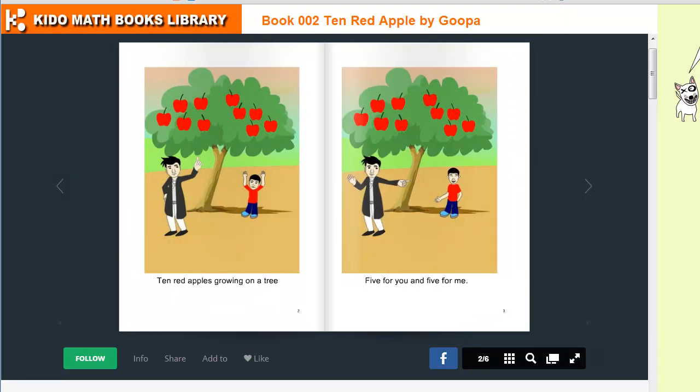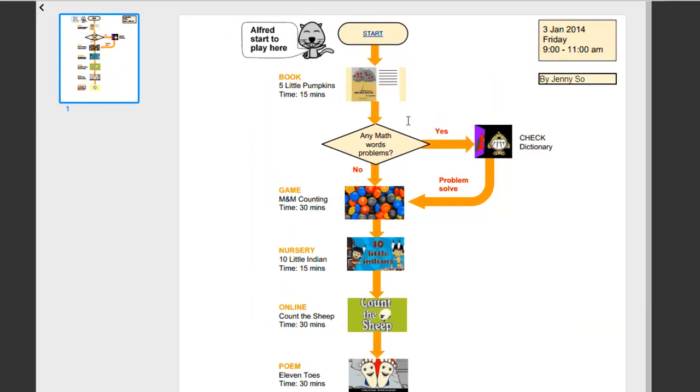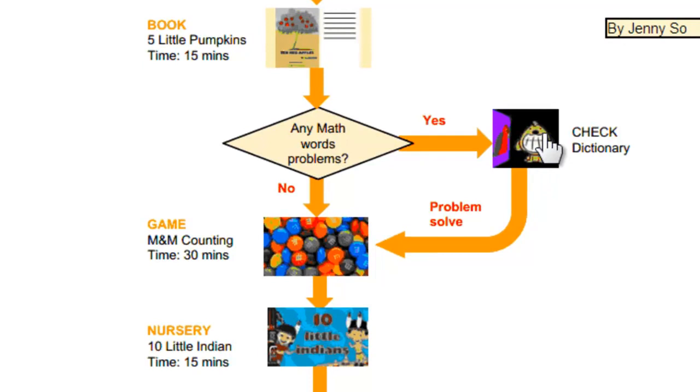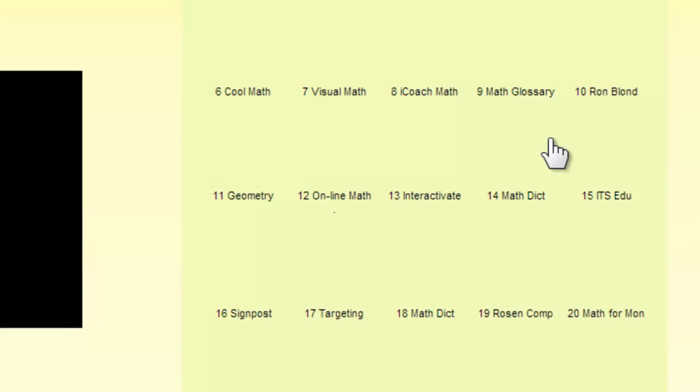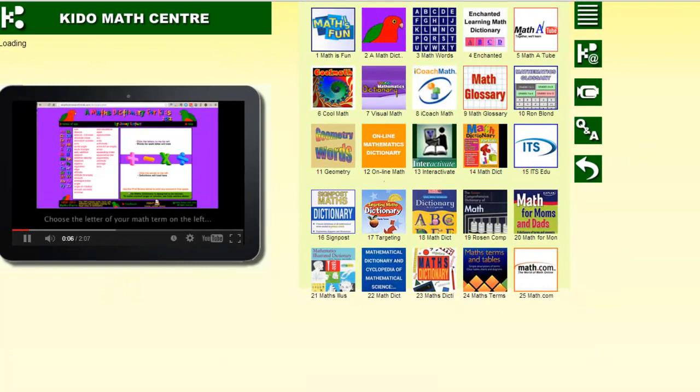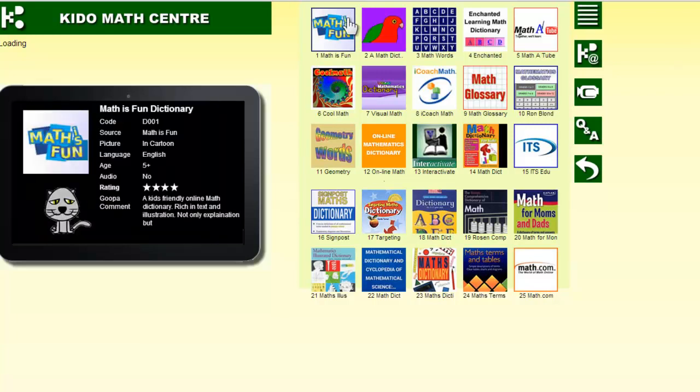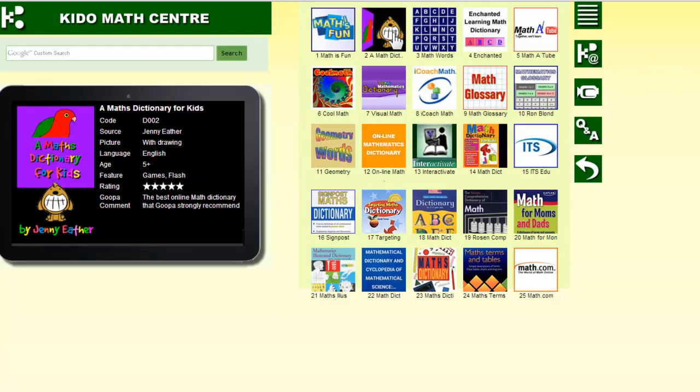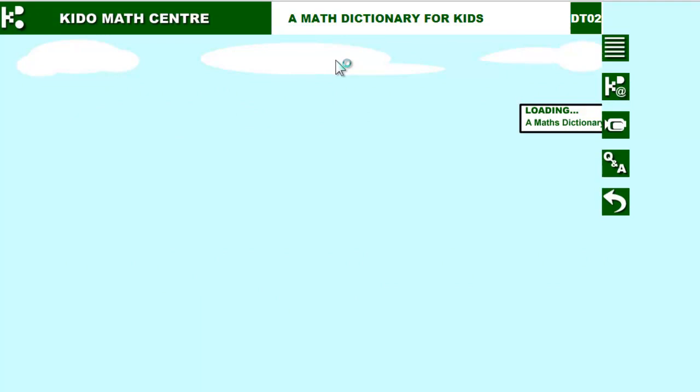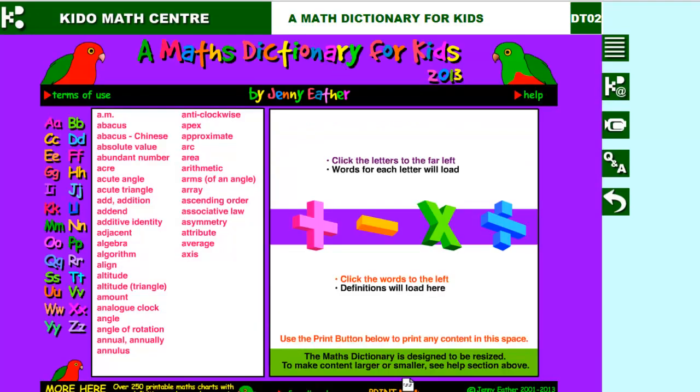Let's go back to the flowchart again. If he has something not understanding about the word, he can click this one to go to a dictionary. There are 25 dictionaries for consideration. My favorite dictionary is this one, the Math Dictionary for Kids.